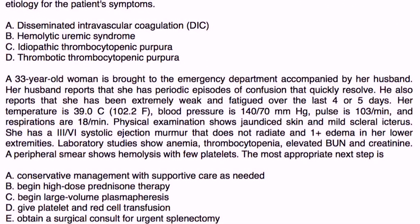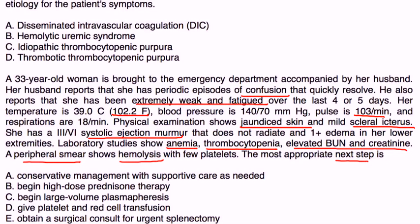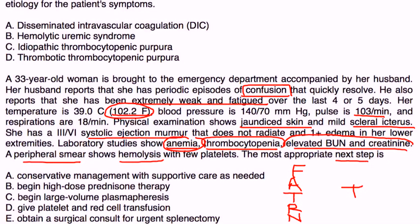Second vignette: A 33-year-old woman is brought to the ED by her husband, who reports periodic episodes of confusion that quickly resolve and extreme weakness and fatigue over the past four to five days. Temperature is 102, blood pressure 140/70, pulse 103. Exam shows jaundiced skin, mild scleral icterus, a systolic ejection murmur, and 1+ lower extremity edema. Labs show anemia, thrombocytopenia, elevated BUN and creatinine. Peripheral smear shows hemolysis with few platelets. She has the classic pentad, indicating TTP.